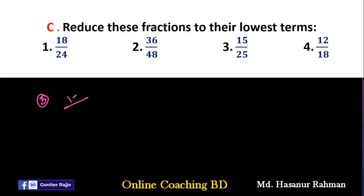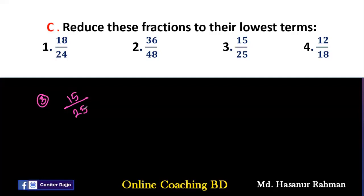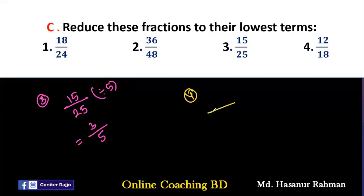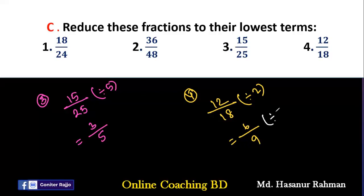Number 3 says 15/25. Here 15 and 25 both have the same unit digit, which is 5. A number is divisible by 5 if its unit digit is 0 or 5. So 15 and 25 both can be divided by 5: 5×3=15 and 5×5=25, giving 3/5. Number 4 says 12/18. We divide by 2 first giving 6/9, then divide by 3 giving 2/3.